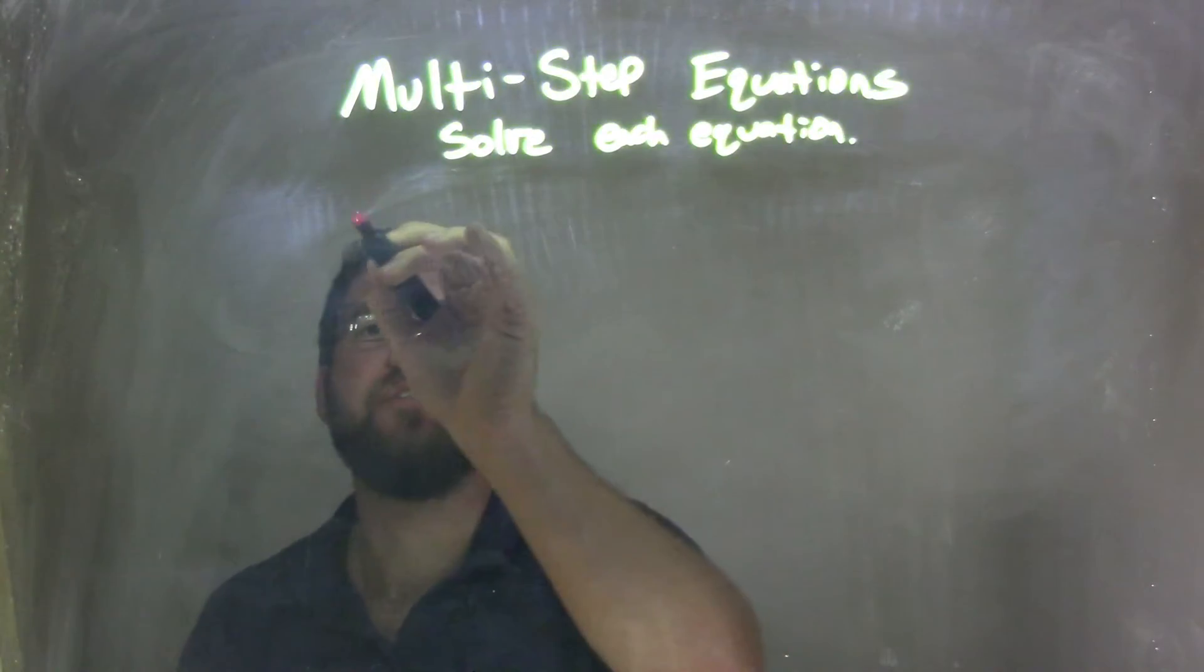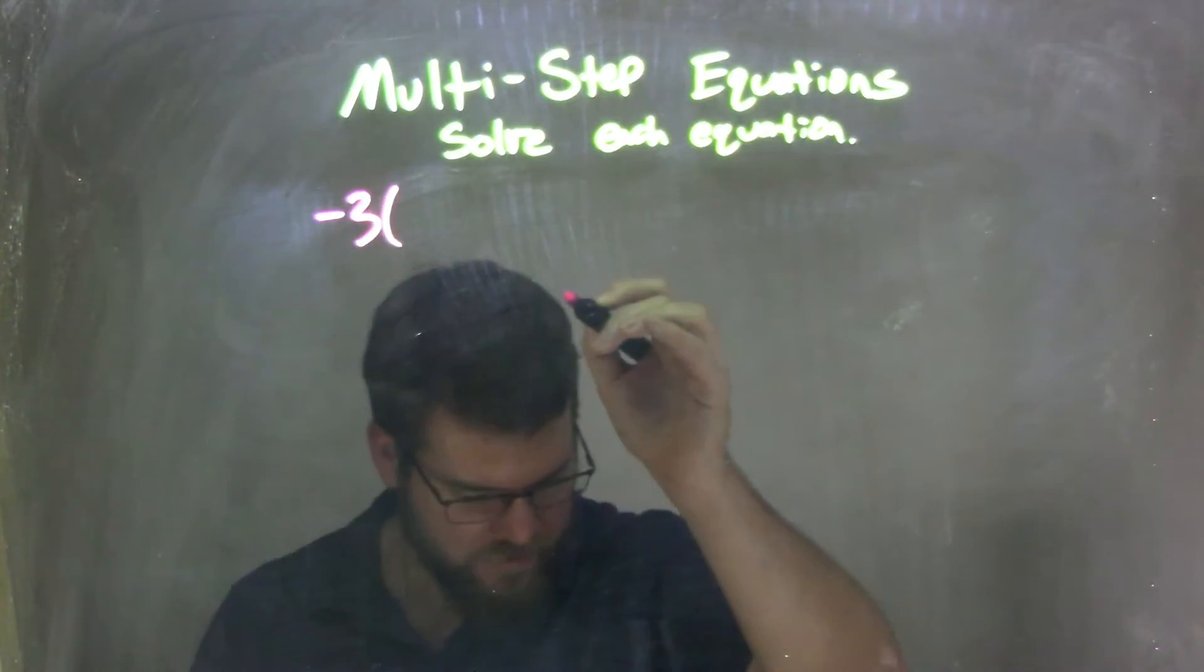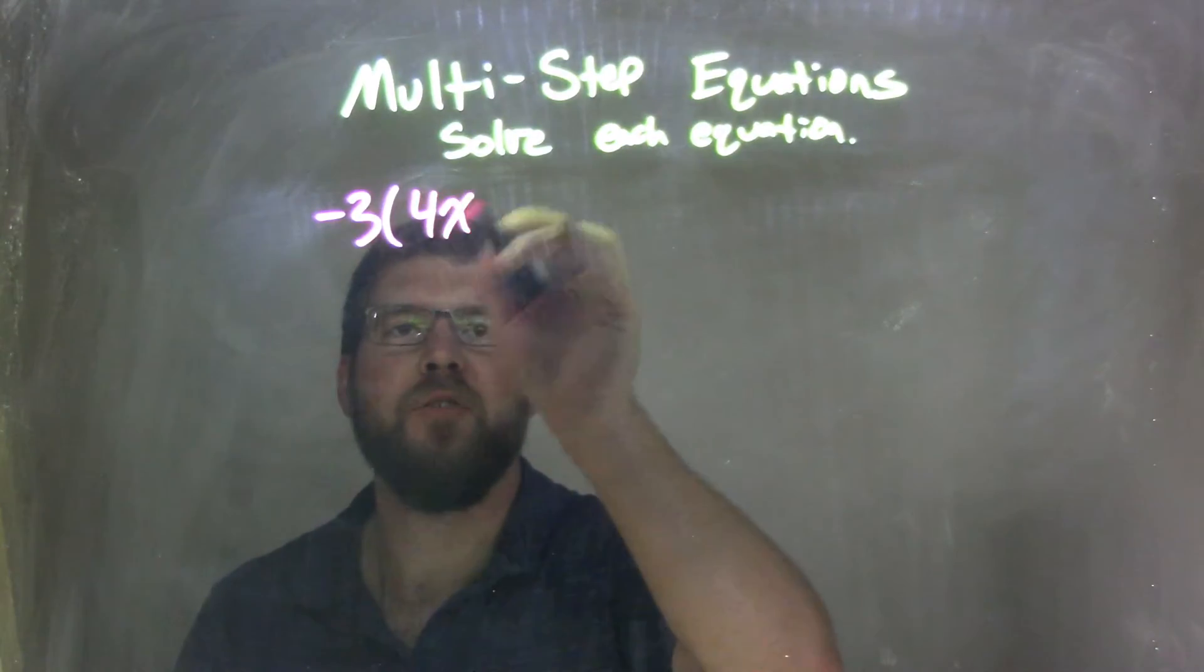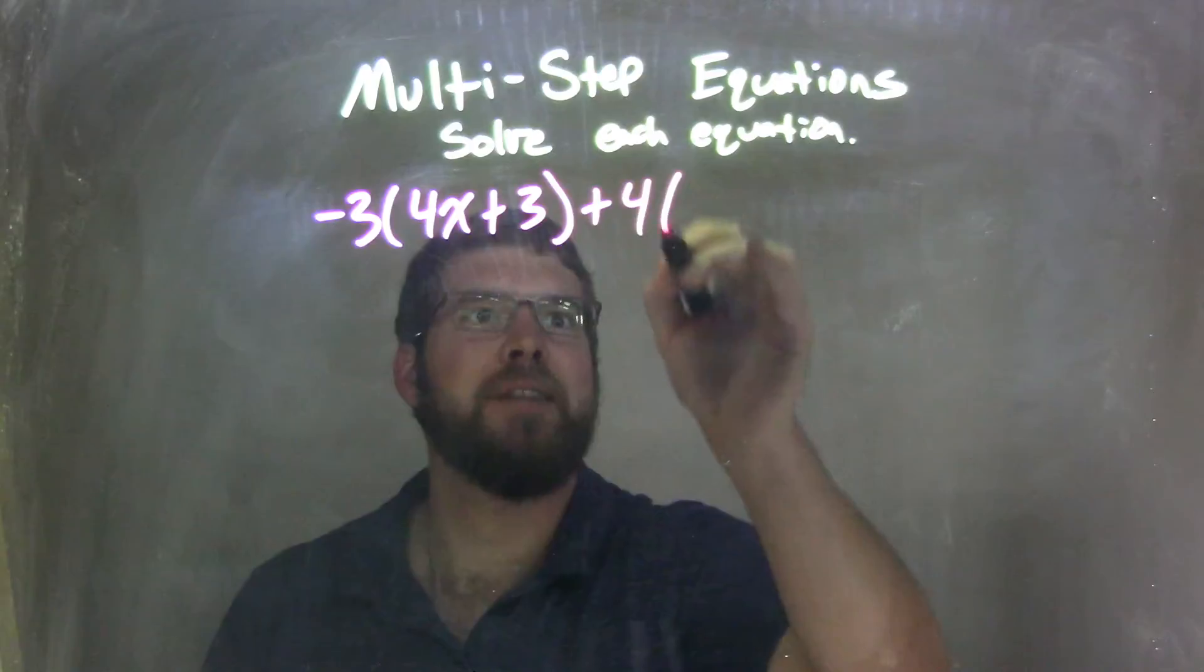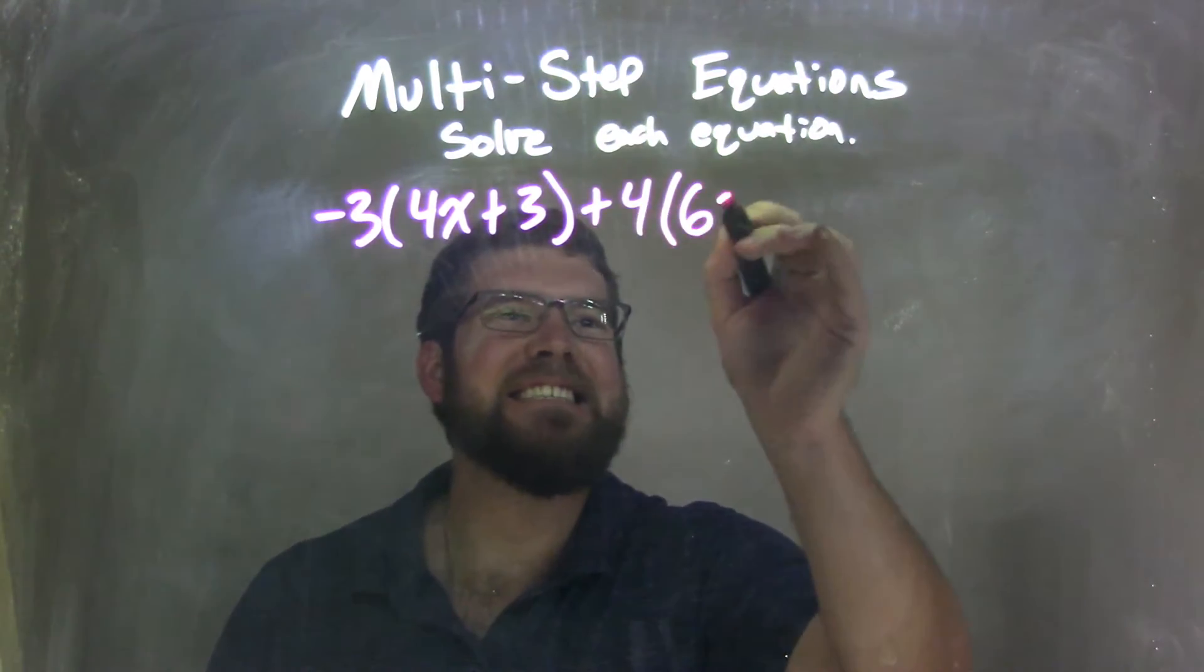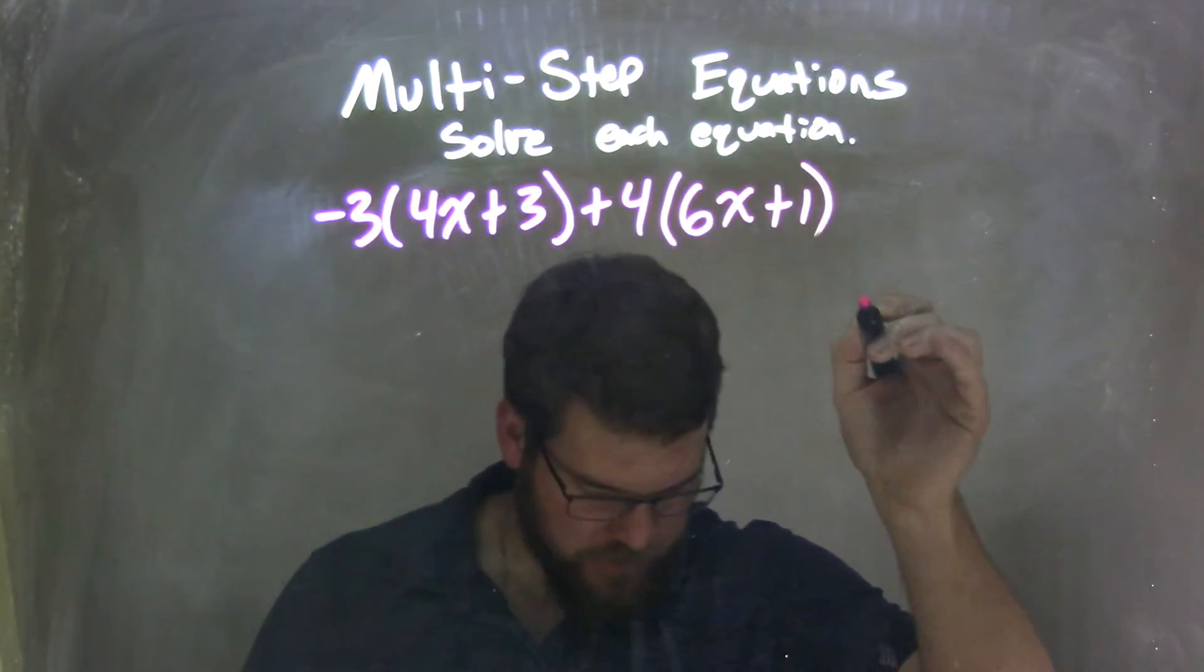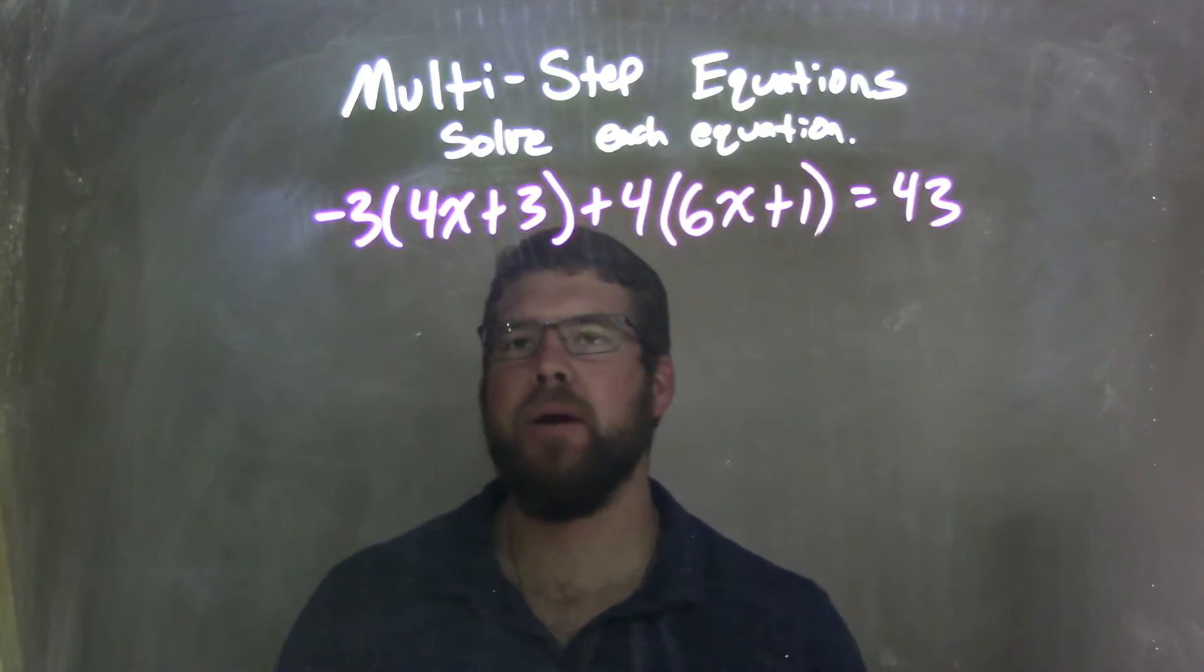So if I was given this equation: negative 3 times the quantity 4x plus 3, plus 4 times the quantity 6x plus 1, equals 43.